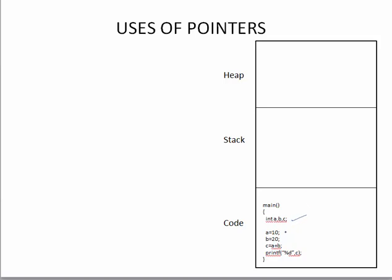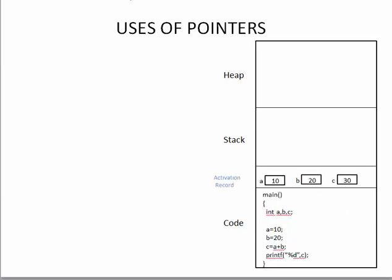Once the program is loaded, it starts executing line by line. When the first line is executed — which contains variable declarations — memory for those variables is allocated. The block of memory allocated for a program or a function is called an activation record. An important point here is that this memory in the stack is directly accessible by the program.